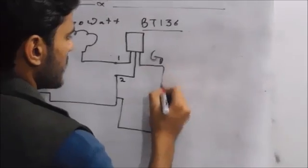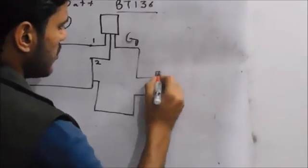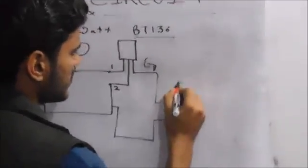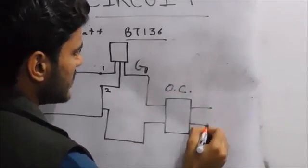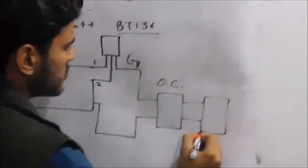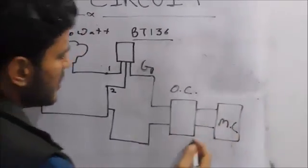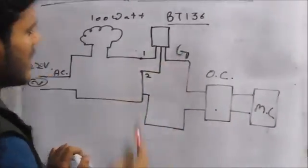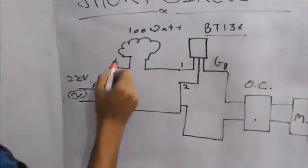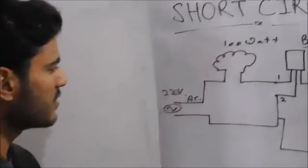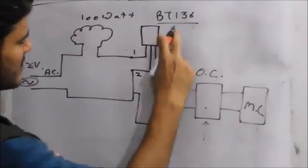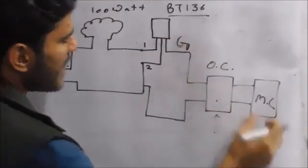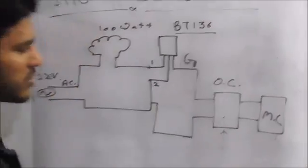Now we will change the circuit slightly and use an optocoupler IC. The microcontroller will trigger this optocoupler IC, and the optocoupler IC will trigger the gate, which will then trigger the bulb. The main purpose of the optocoupler IC is to prevent AC from flowing back into the microcontroller so that it will not burn.